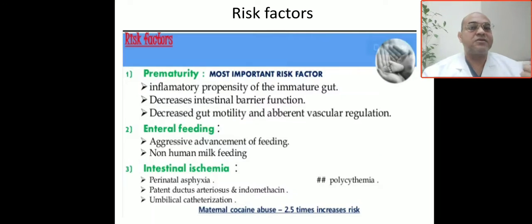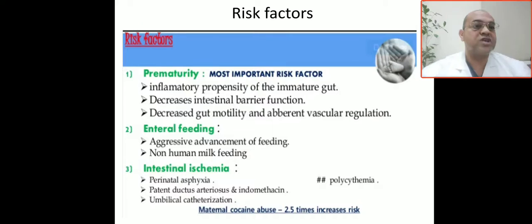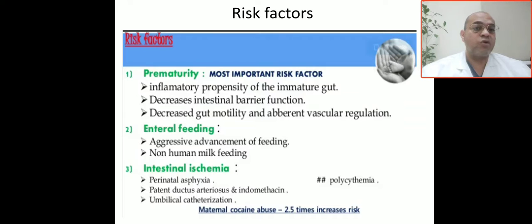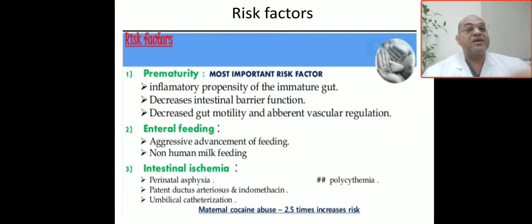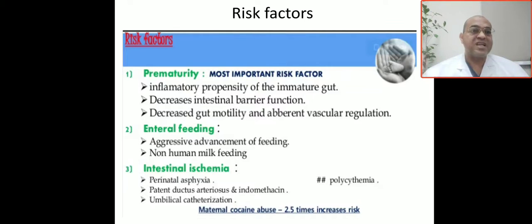Another risk factor is enteral feeds — aggressive advancement of feeds, especially bottle formula, is a high risk for necrotizing enterocolitis and perforation. Not using human milk is also a risk factor. The last risk factor is intestinal ischemia, which can come from asphyxia, PDA due to steal phenomenon and decreased blood supply to the gut.